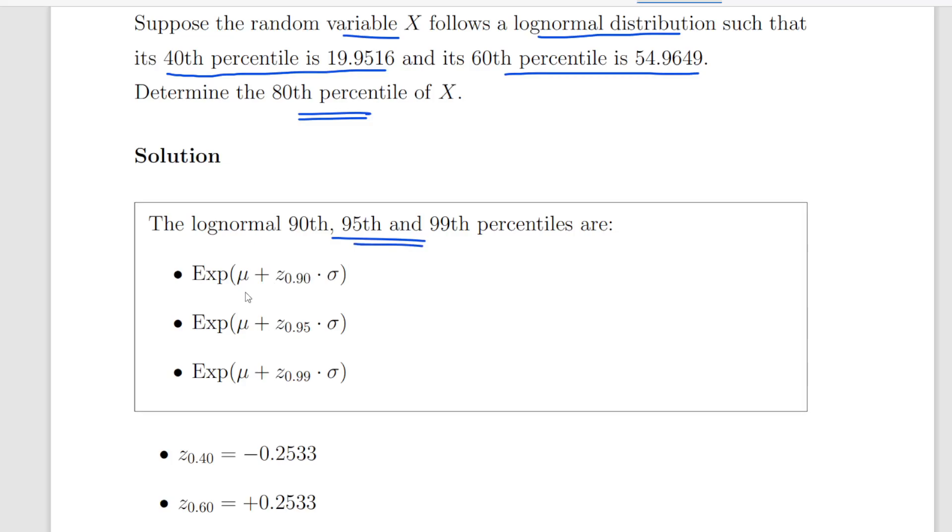So essentially this follows on from the normal distribution and it is underlying it essentially. What we have there are essentially Z scores, the Z score for 90%, 95% and 99%.